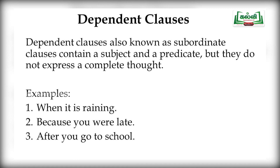Third example: 'After you go to school.' Here, 'you' is the subject and 'go' is the verb, so it fulfills the rule of a clause. But the sentence cannot convey a complete meaning; it has to rely upon another one. Hence, it is an example of a dependent clause. So all three — 'when it is raining,' 'because you were late,' and 'after you go to school' — are examples of dependent clauses.